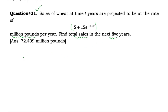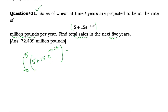To find the total sales, we calculate by integration with lower limit zero and upper limit five, since we need the total sales in the next five years. The rate function to integrate is: 5 plus 15 times e to the power of negative 0.2t.